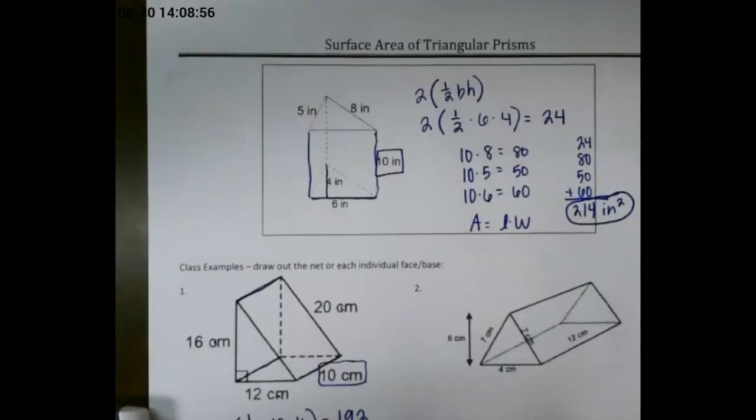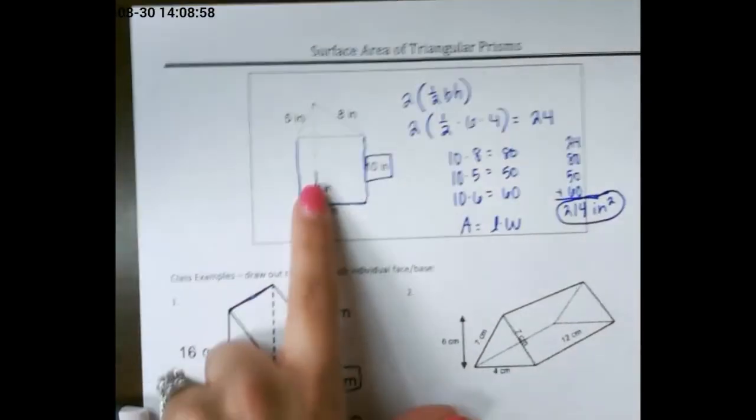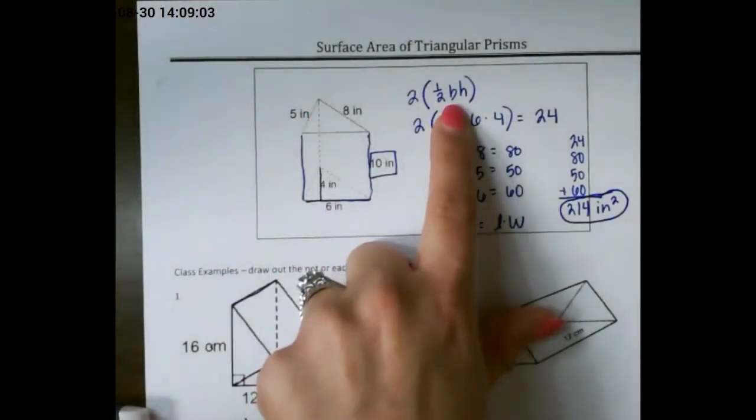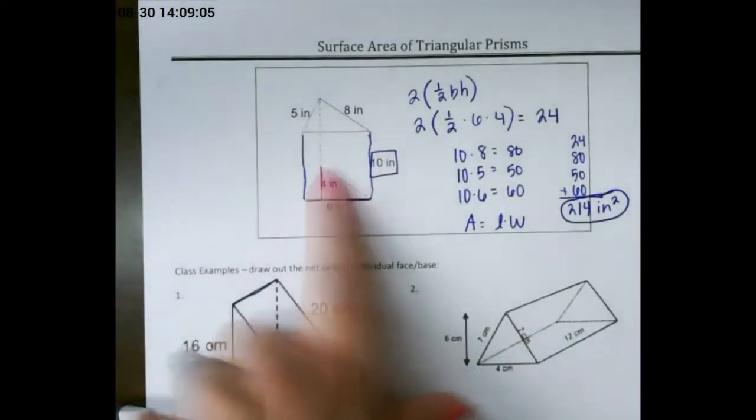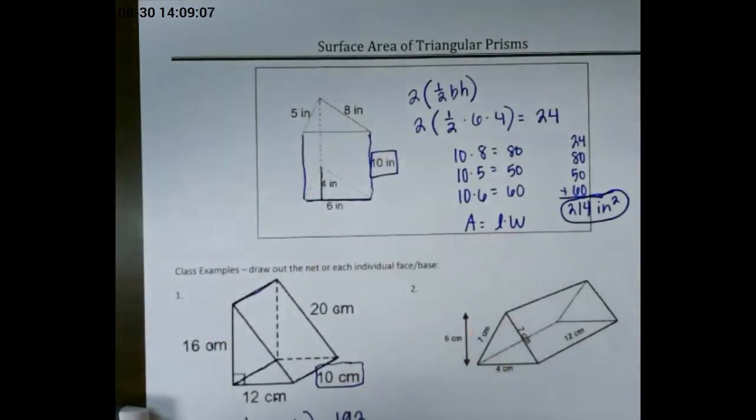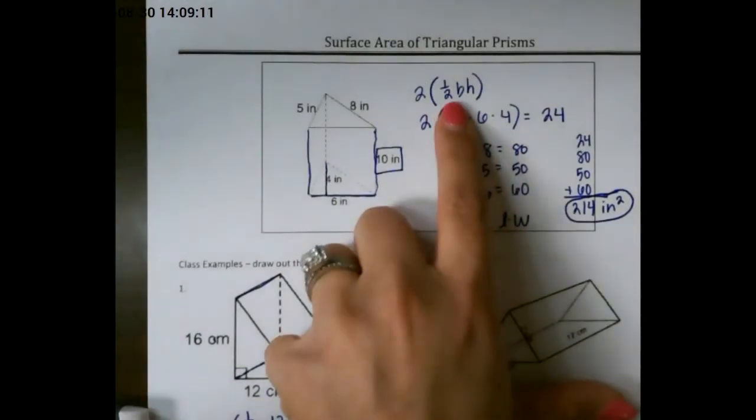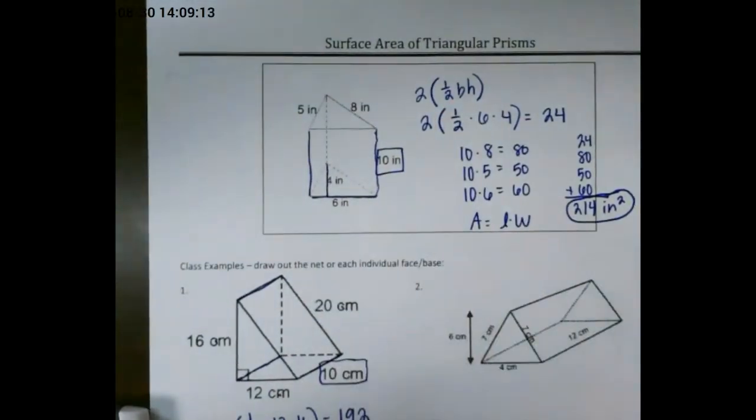To review, surface area is just finding the area of each side of your shape. We have two triangles, so we use our triangle formula, and we have three rectangles, so we use our rectangle formula. You can find the surface area of any shape as long as you know the formula for each two-dimensional figure that makes it up.